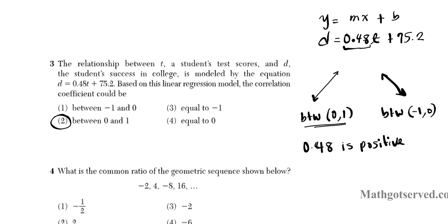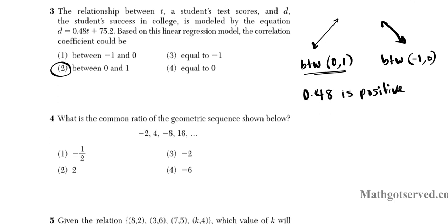Alright, let's take a look at number 4. It says what is the common ratio of the geometric sequence shown below? So there are two ways of doing this. You can use a formula or you can just find it by inspection.